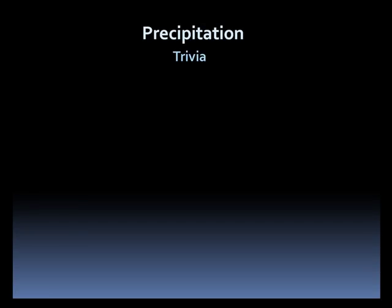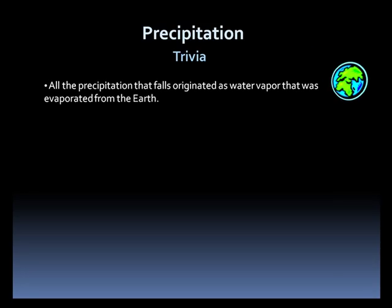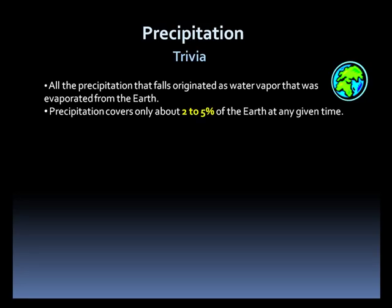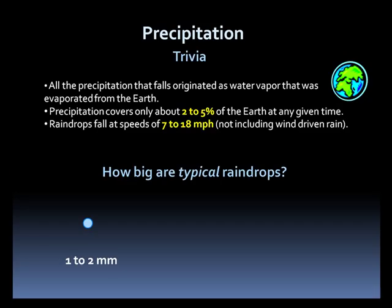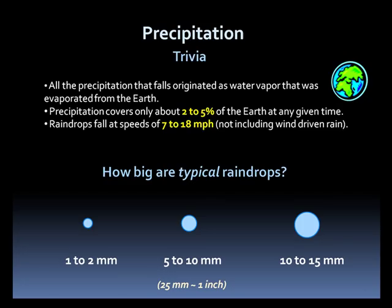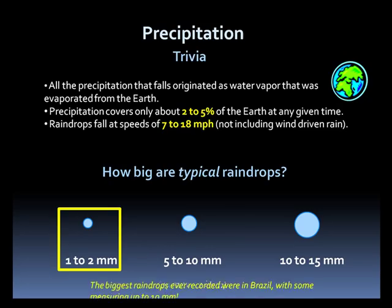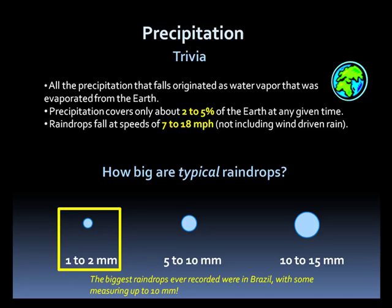Here's a little precipitation trivia for you. Did you know that all the precipitation that falls originated as water vapor from the earth? Precipitation only covers 2–5% of the earth at any given time. Raindrops fall at speeds of 7–18 miles per hour. But do you know how big a typical raindrop is? Is it 1–2 millimeters, 5–10 millimeters, or 10–15 millimeters? For reference, 25 millimeters is close to 1 inch. If you chose 1–2 millimeters, you are right. The largest raindrops ever recorded were in Brazil and measured up to 10 millimeters in size.